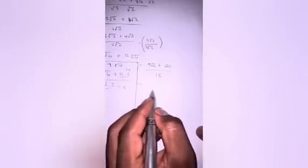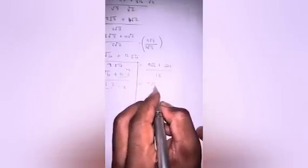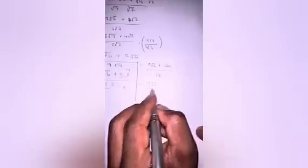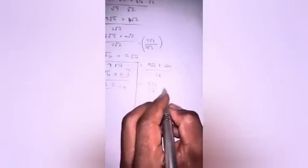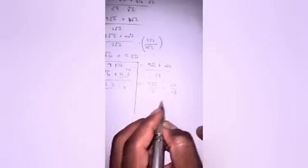Okay, now this equals to 9 square root of 6 divided by 18 plus 24 divided by 18.